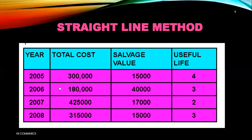For 2006, we apply the straight line method in the same way. You must concentrate carefully when writing values. One important point: here we have 180,000 — focus on the zeros. There are four zeros, and if you miss even one, your answer will be wrong. In accounting, zeros play a very important role. The salvage value is 40,000 and useful life is three years.